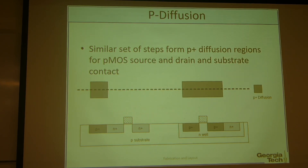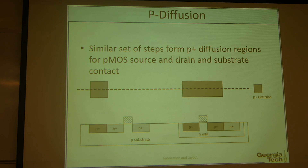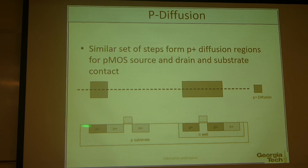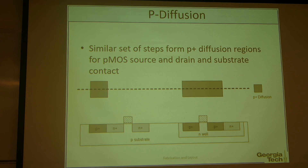Then we strip off the remaining oxide and we have this structure. With the same process we also make the P-MOS junctions. So finally we have fabricated the transistors up to this point. We call the process steps up to now the front end of line, and after this transistor process, we call it the back end of line.